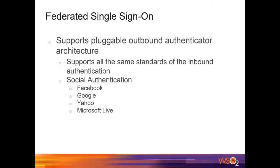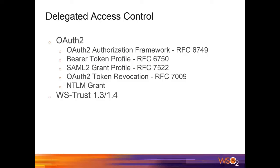That was the feature set in IS 5.0; the new release additions will be covered shortly. For delegated access control, Identity Server supports OAuth 2 and WS-Trust. We support the standard OAuth framework and the Bearer token profile, the extended SAML2 grant profile, the token revocation profile, and a custom NTLM grant profile. For WS-Trust, we support versions 1.3 and 1.4.